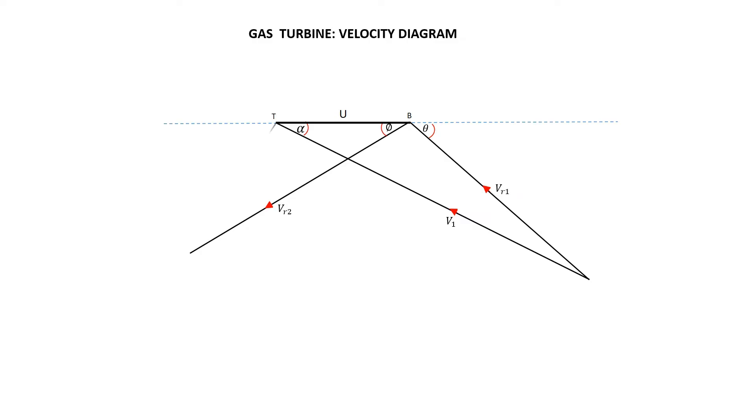Then from the turbine point T, draw the absolute outlet velocity of the turbine V2 at an axial angle beta.